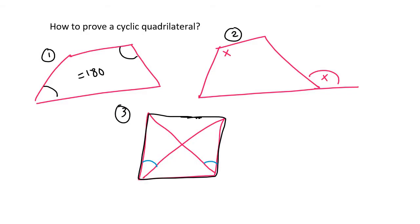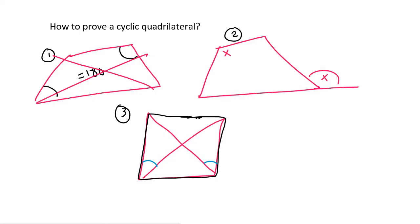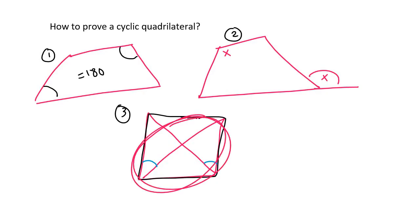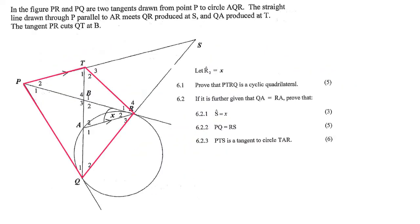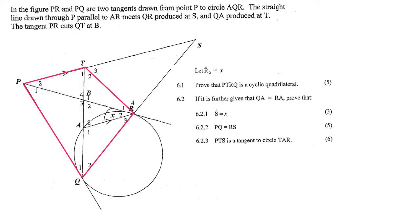What I always tell my students is the following: if you can see that there are no lines going across, then you can either look for option number one or option number two. If you can see that there are lines going across, then it might be option number three. If we look at the cyclic quadrilateral, we can definitely see that there are lines going across, so it could be number three, but it could also be option one or two.